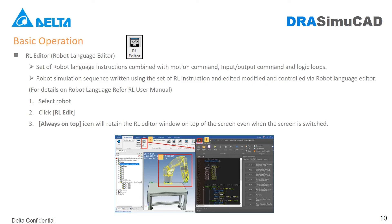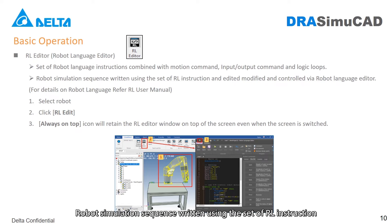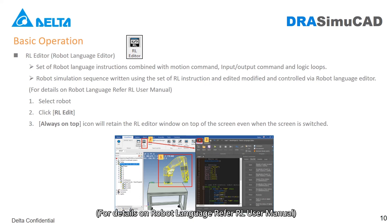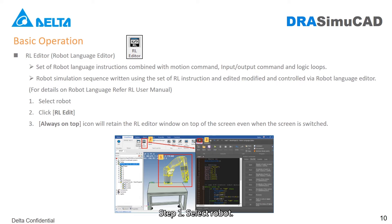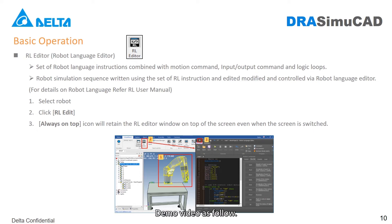Aisle Editor Button: A set of robot language instructions combined with motion command, input/output command, and logic loops. Robot simulation sequence is written using the set of Aisle instructions and is edited, modified, and controlled via the robot language editor. For details on robot language, refer to the Aisle user manual. Operation steps: Step 1, select robot. Step 2, click Aisle Editor. Step 3, the Always on Top icon will retain the Aisle Editor window on top of the screen even when the screen is switched. Demo video as follows.